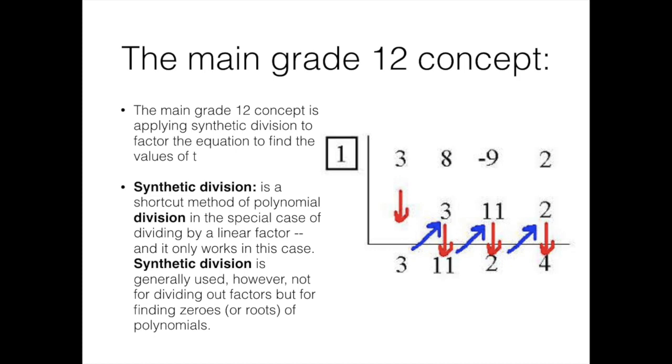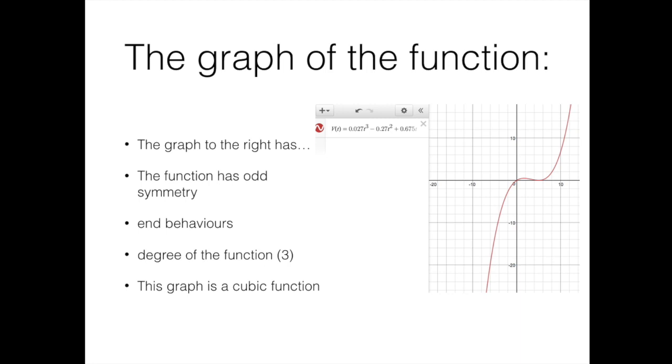To the right is a graph of the function from the question. The function has odd symmetry because even functions can be flipped horizontally, whereas this graph cannot and will not have the same function on both sides. The end behaviors as x approaches negative infinity, y will approach negative infinity. And as x approaches infinity, y approaches infinity as well. The x values on the right side will go up as opposed to the opposite on the left side, they will go down. The degree is 3 as this is the highest exponent in the equation given and how we know that this function is a cubic function.